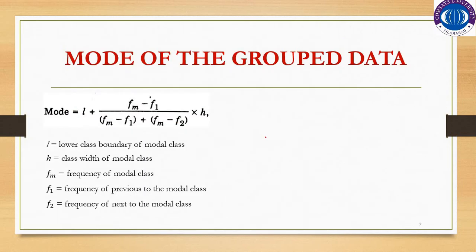Now we will calculate the mode for the grouped data. The mode is the most frequent value. In ungrouped data you find the most repeated value, and there can be more than one mode or possibly no mode. For grouped data there is a specific formula to calculate the mode, and the first step is to find the modal class.